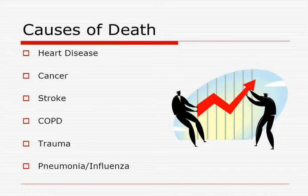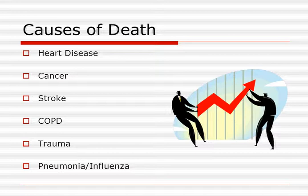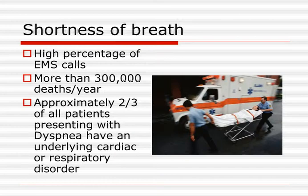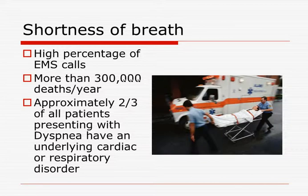Down through the hierarchy for causes of death, the number one cause of death in the adult population is heart disease, then cancer, stroke, COPD, trauma, and pneumonia or influenza. COPD is number four — that's what we're dealing with right here. Shortness of breath is probably one of our highest percentage of EMS calls. Between chest pain and shortness of breath, which sometimes go hand-in-hand, it's a very high percentage of EMS calls.